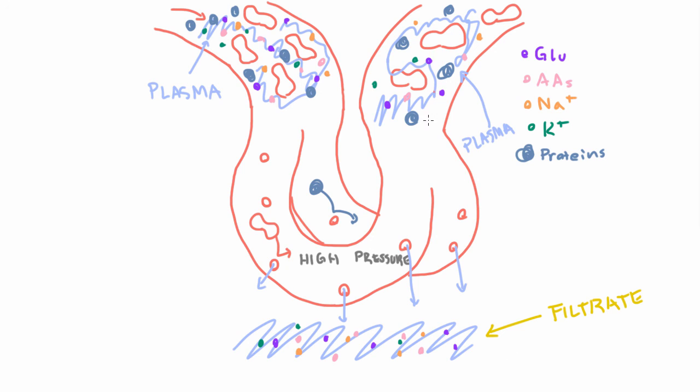So actually you have a fair amount of plasma in the blood leaving the glomerulus as well. And of course, if there was no plasma, this blood would not be able to flow out of the glomerulus. It would just be clumps of red blood cells and proteins that are not fluid enough to flow.